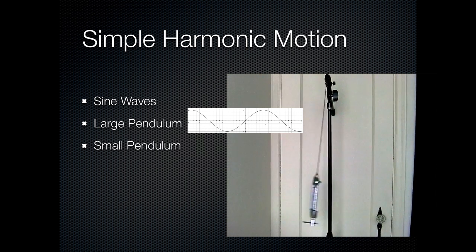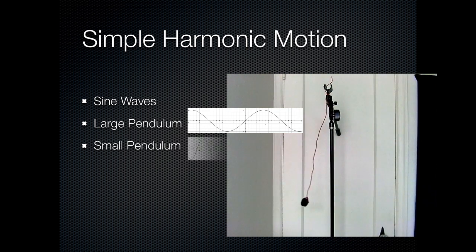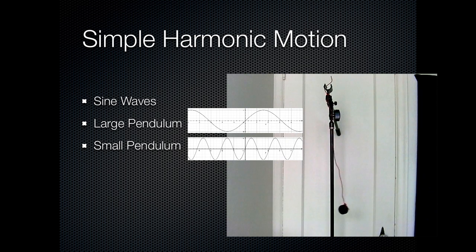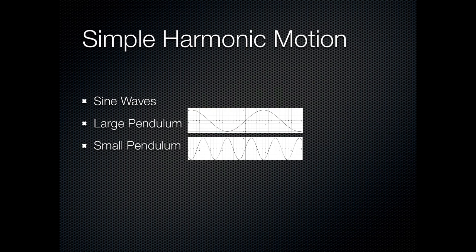If you graphed the movement of a smaller pendulum, you'd see it was moving faster side to side, and so you'd get a graph of a sine wave with a higher frequency. It's moving faster, so it's crossing back and forth more often, thus higher frequency.